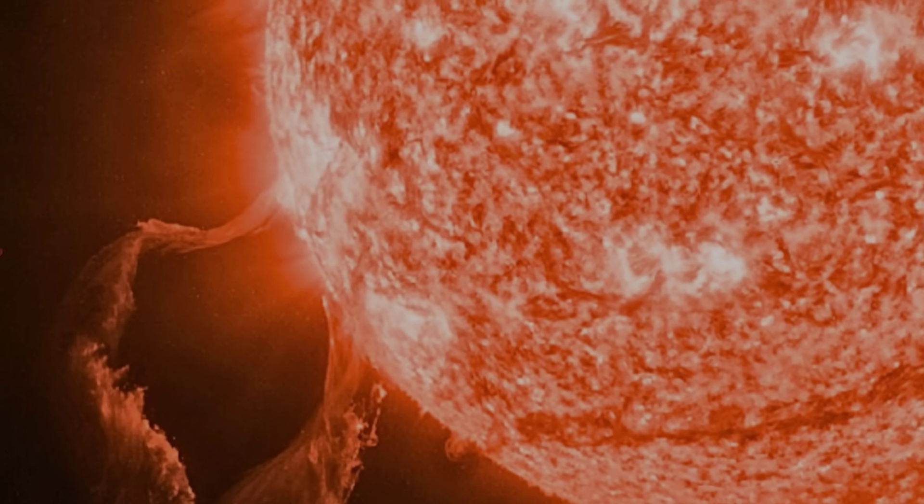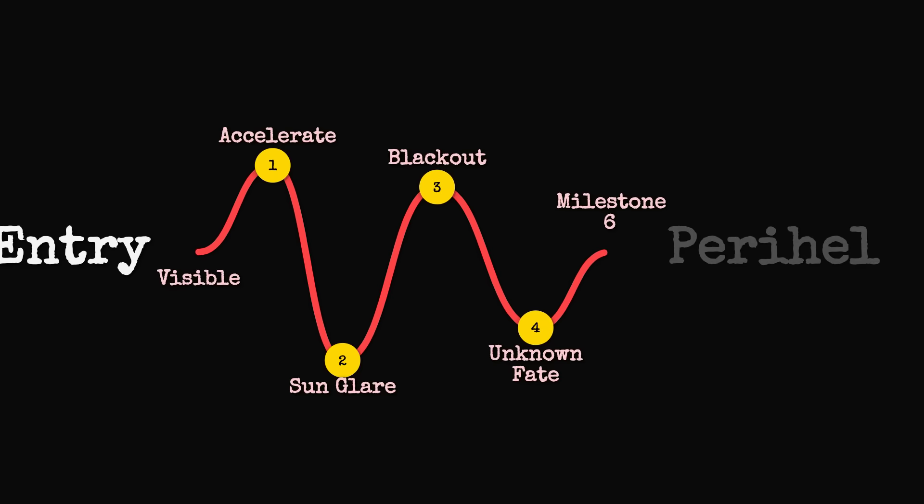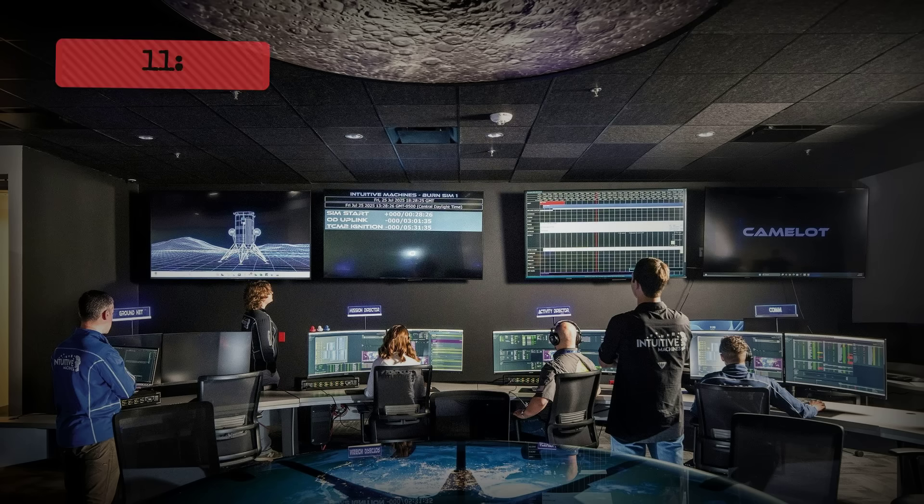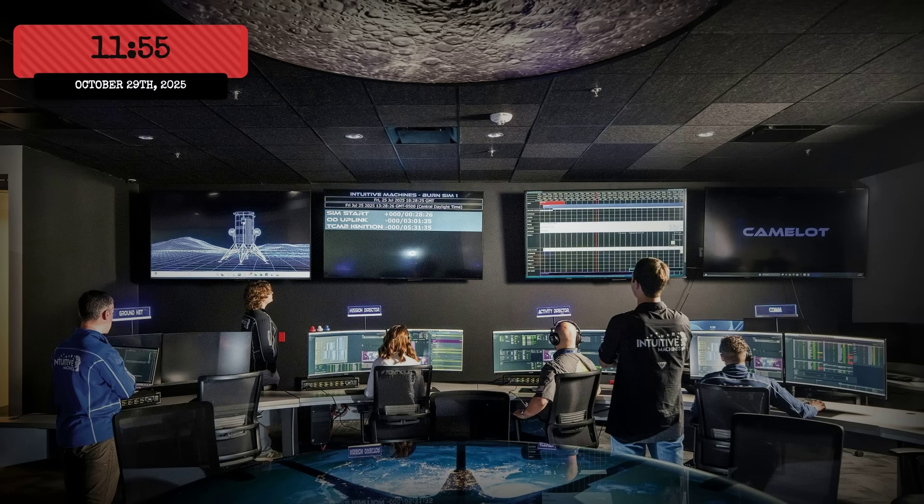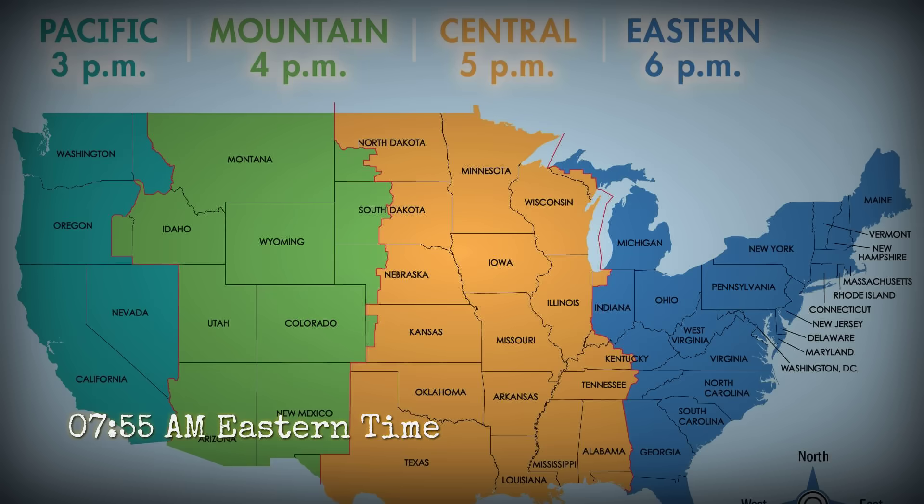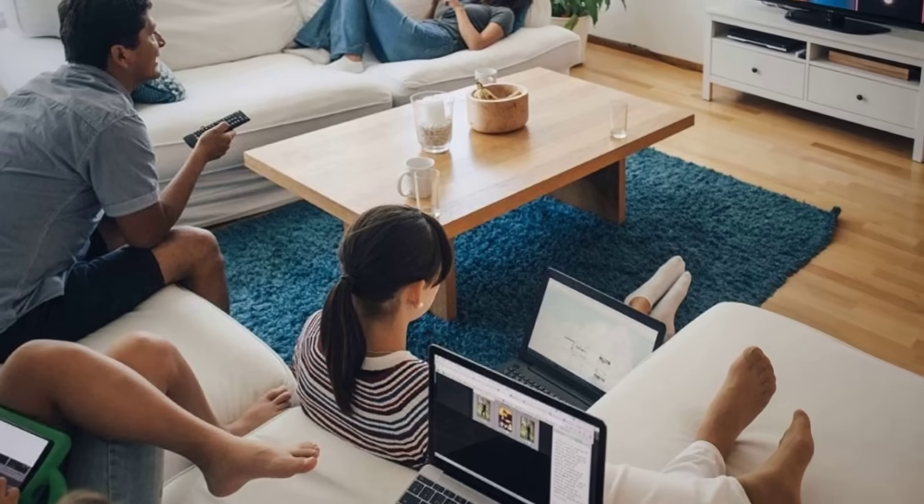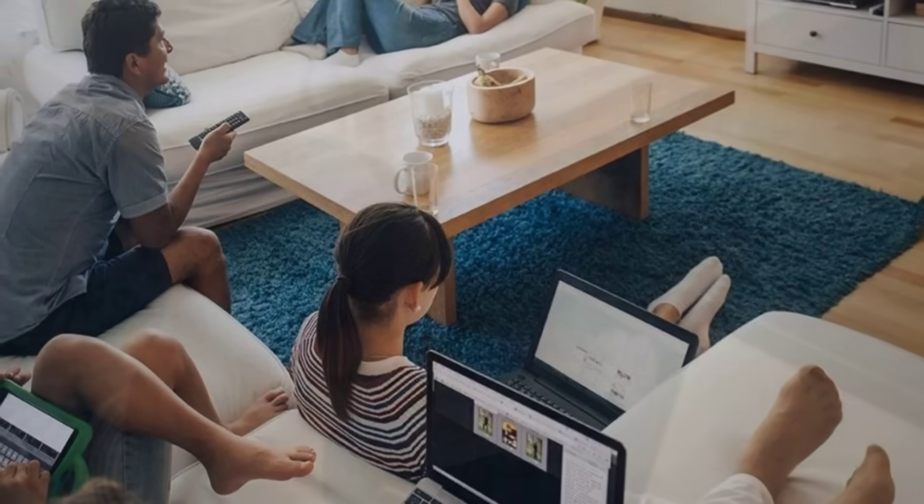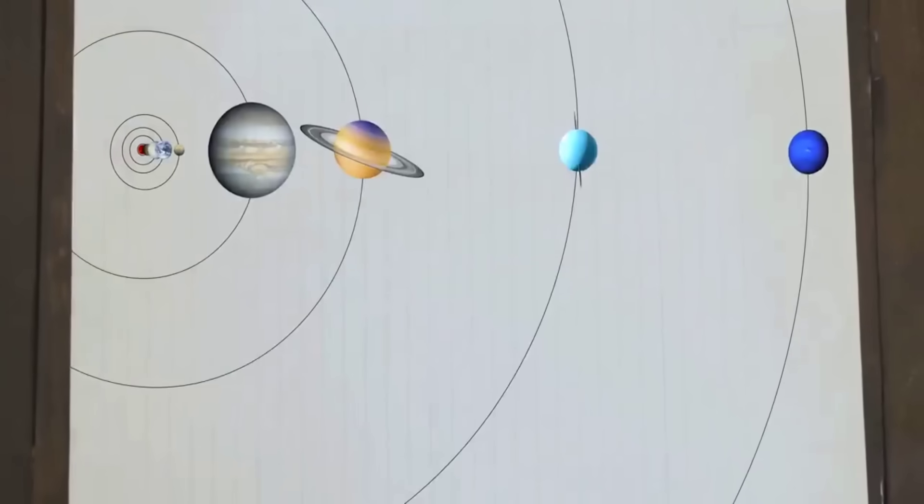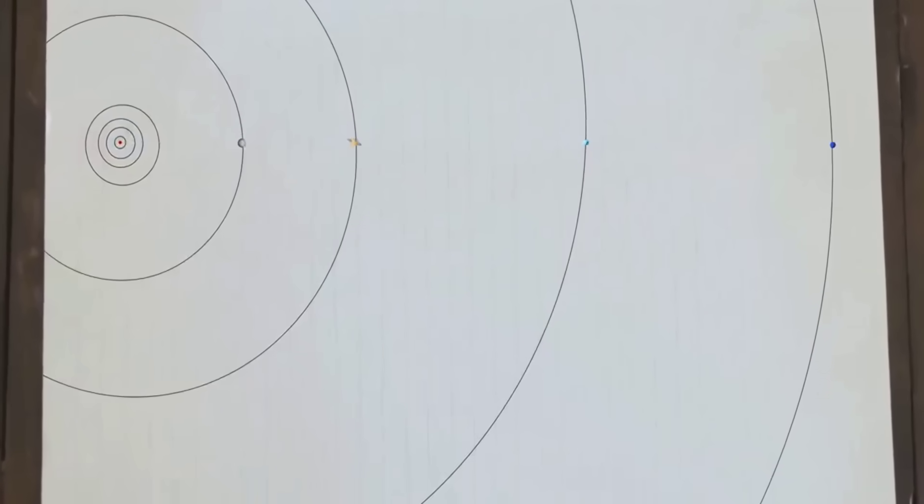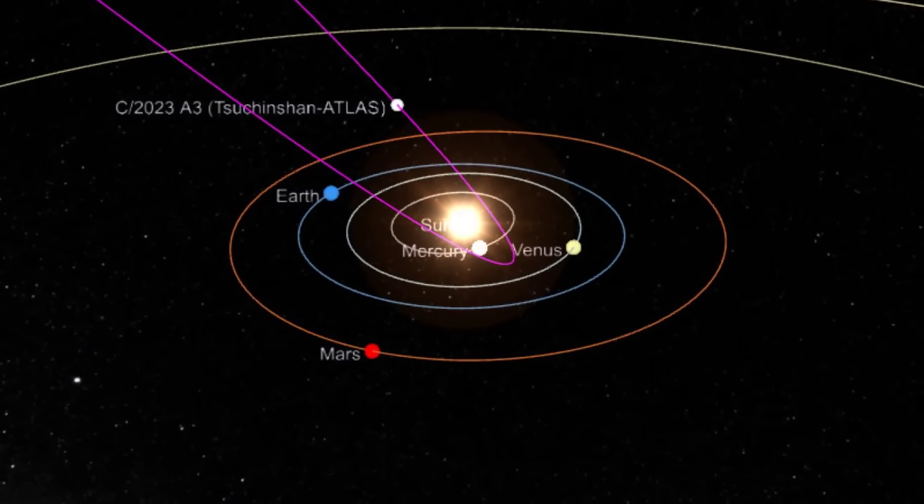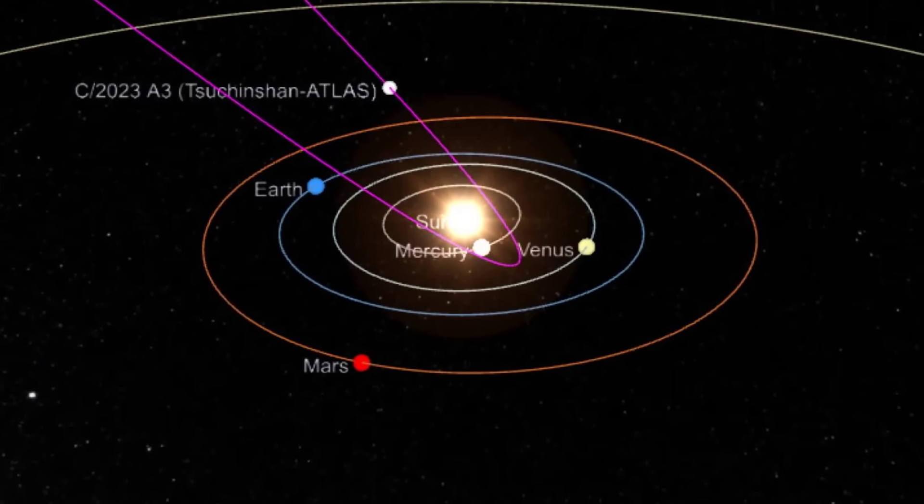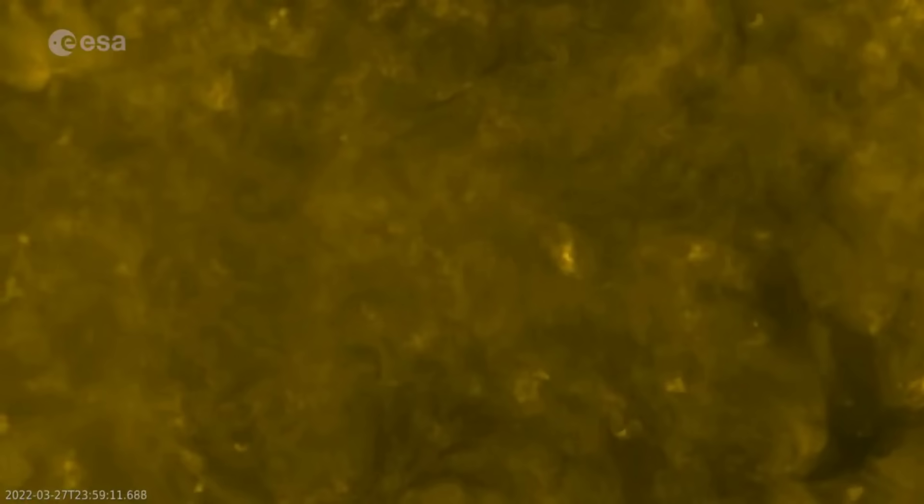So what's coming up? The perihelion of 3I/Atlas occurs on October 29th at 11:55 a.m. Universal Time. That's 7:55 a.m. Eastern Time for those of you in the United States. At that moment, it will be approximately 1.36 astronomical units from the sun, about 204 million kilometers. During this time, solar heating will be at maximum.